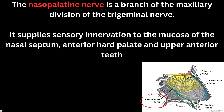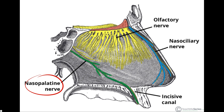Before going into the removal, we need to understand the nasopalatine nerve. It is a branch of the maxillary division of the trigeminal nerve — the fifth cranial nerve — which has three branches: the ophthalmic nerve, the maxillary nerve, and the mandibular nerve. From the maxillary division, the nasopalatine nerve descends and supplies sensory innervation to the mucosa of the nasal septum, the anterior hard palate, and the upper anterior teeth — the central incisors, lateral incisors, and canines. Here is a picture showing the course of the nasopalatine nerve, supplying the upper anterior teeth together with the anterior palate.